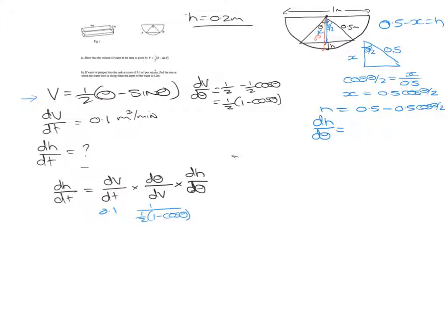Now 0.5 cos theta over 2, cos goes to negative sine, so negative cos is going to positive sine, so that's going to be 0.5 sin theta over 2. We need to multiply by the inside function differentiated. So this all turns out to be 0.25 sin theta over 2, which we can now put in here.